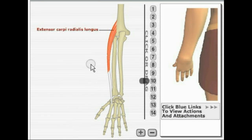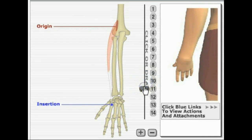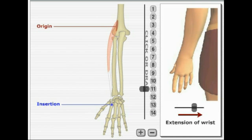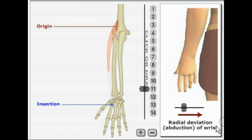Next, we have extensor carpi radialis longus. It originates on the lateral epicondyle of the humerus and inserts into metacarpal number two. Its primary actions are extension of the wrist and abduction of the wrist.